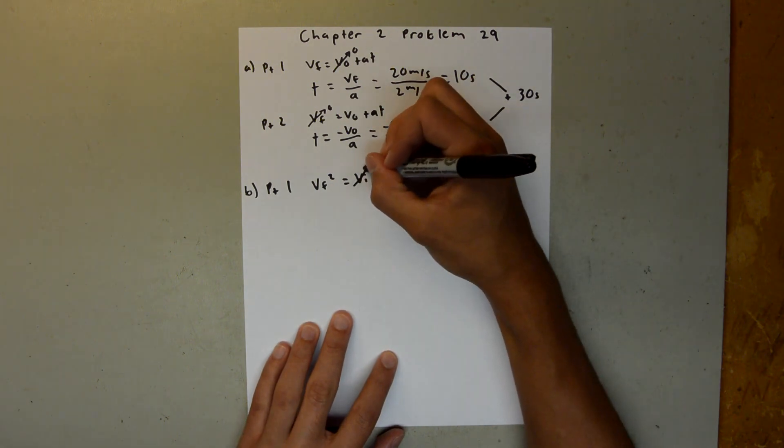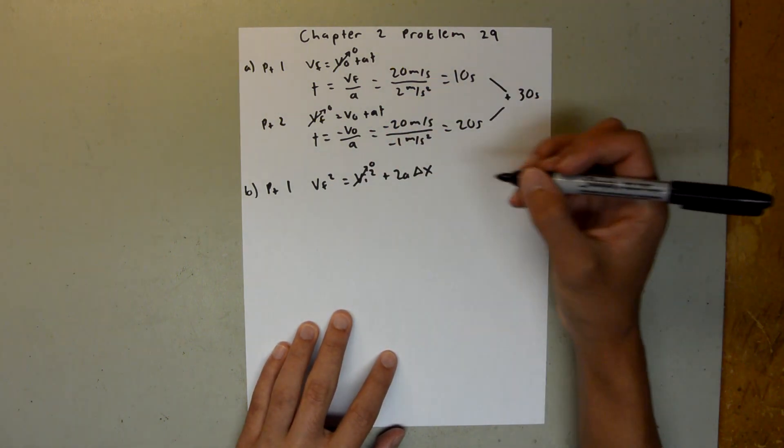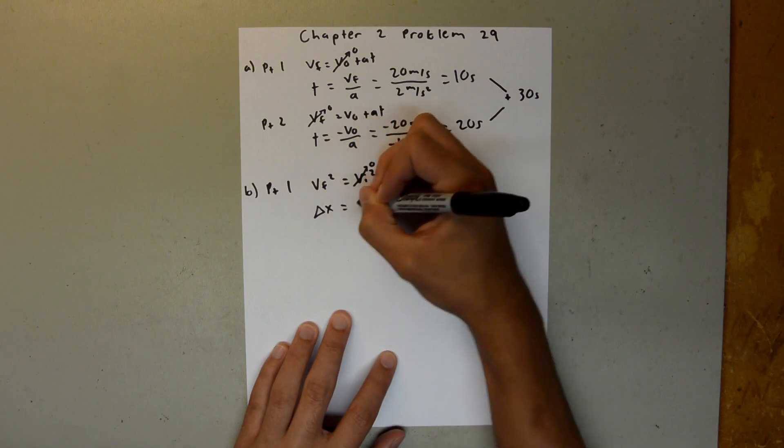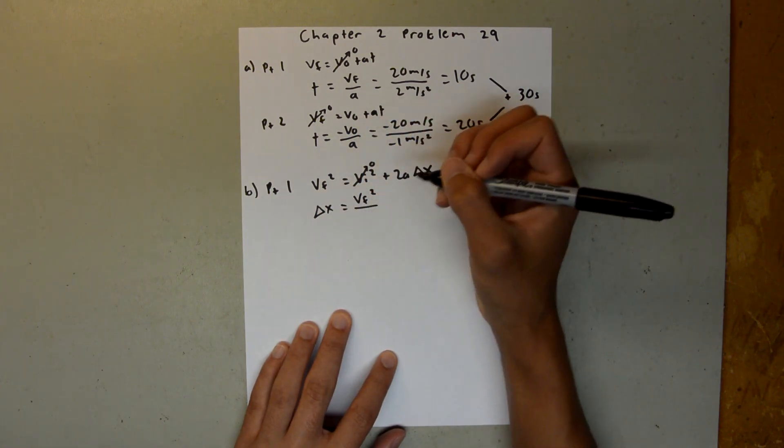And again, for our first part, our initial velocity is 0, so then when you solve for delta X, you get delta X is equal to V final squared over 2A.